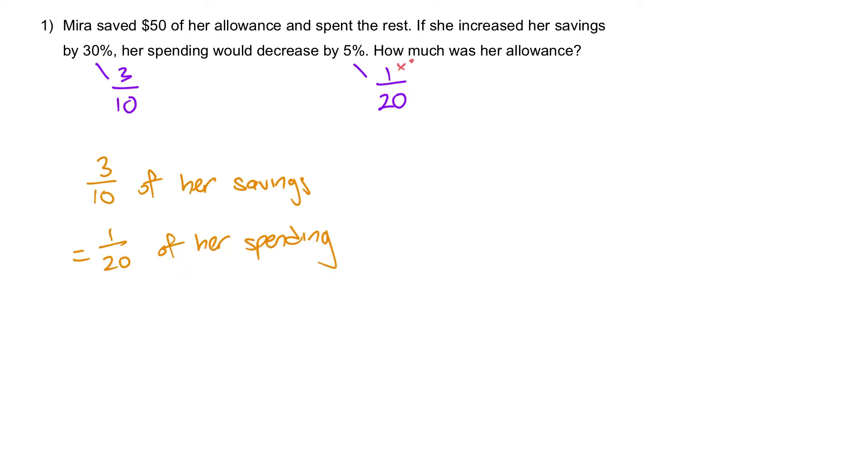What is the equivalent of one out of twenty? We can times 3 to get three out of sixty. After we have achieved a common numerator of 3 and 3, we look at the denominator. The denominator value tells us about the total number of units. For savings there will be 10 units, and for spending it will be 60 units.